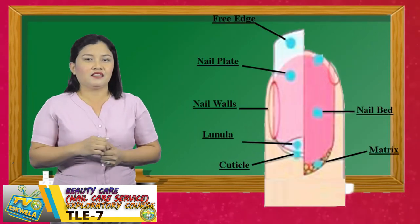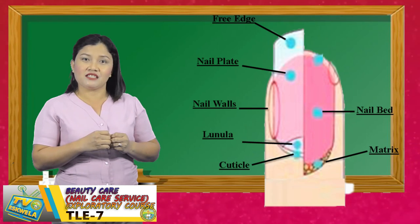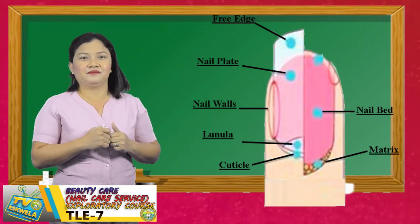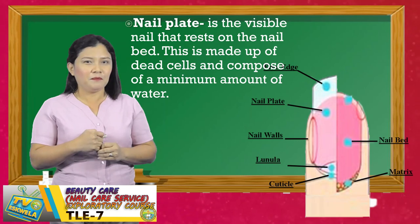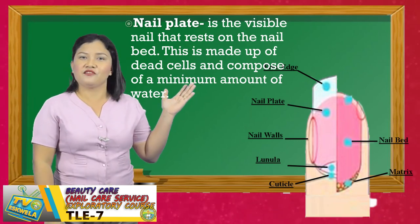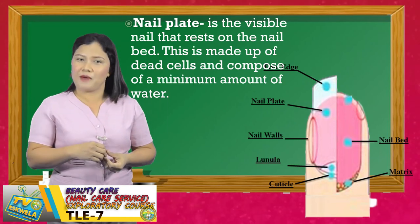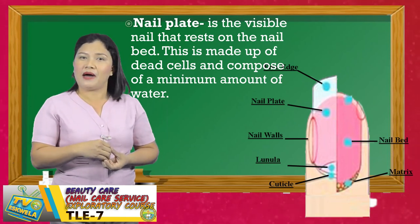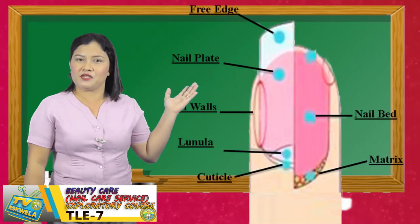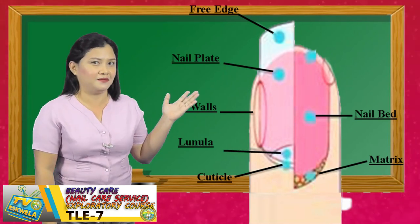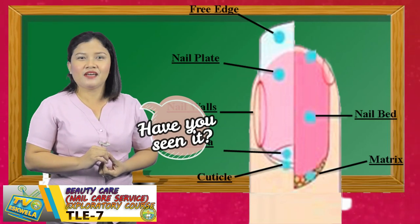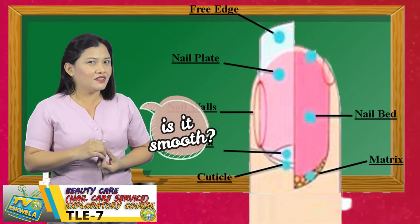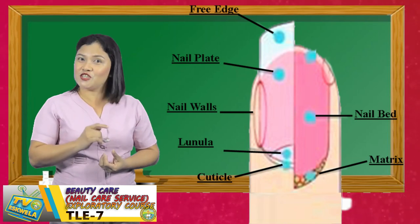Let's take a look at the picture to see where cuticle is located. Let's proceed to nail plate. Nail plate is the visible nail that rests on the nail bed. This is made up of dead cells and composed of a minimum amount of water. Look at the picture to see where nail plate is located. Feel free to touch the nail plate of your fingernails. Is it smooth? It should be smooth!